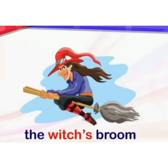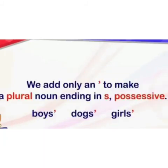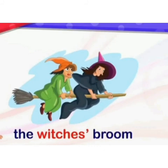Rule 2: We add only an apostrophe to make a plural noun ending in S possessive. For example: boys', dogs', girls', witches' — the witches' broom. Boys, dogs, girls, and witches are plural nouns ending in S.